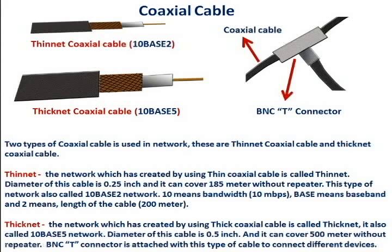Thicknet: the network which is created by using thick coaxial cable is called thicknet. It is also called a 10Base5 network. The diameter of this cable is 0.5 inch, and it can cover 500 meters without a repeater. The BNC connector is attached with this type of cable to connect different devices.